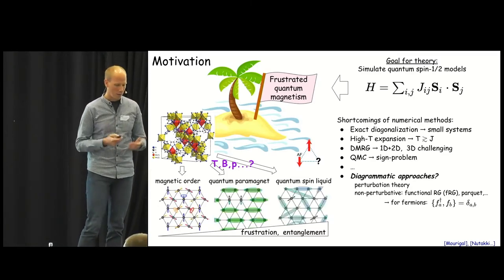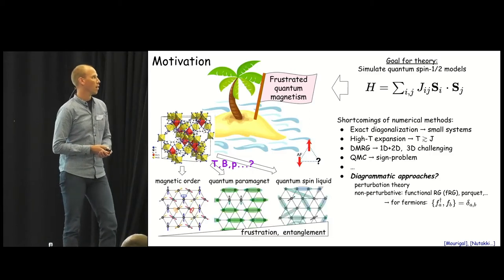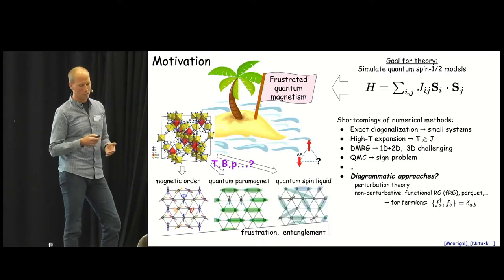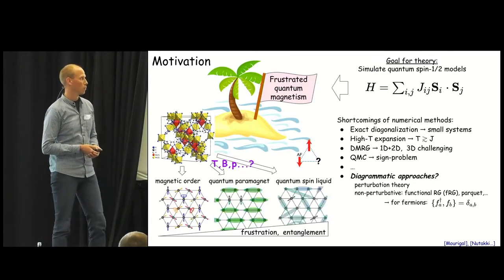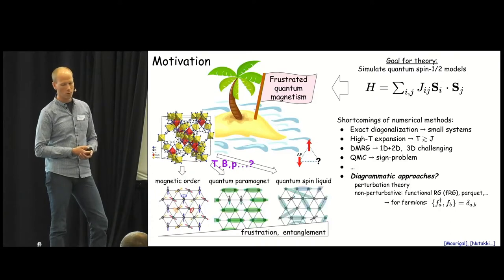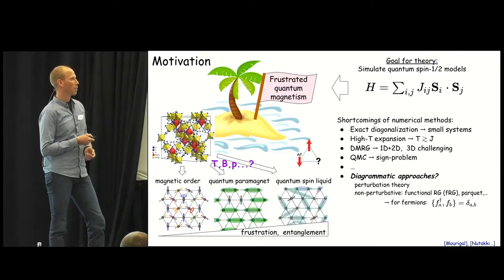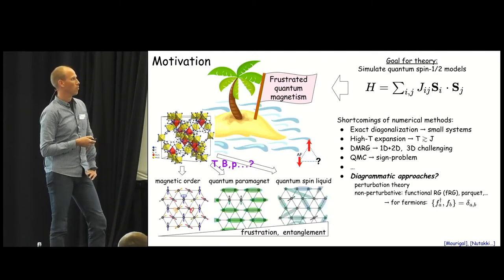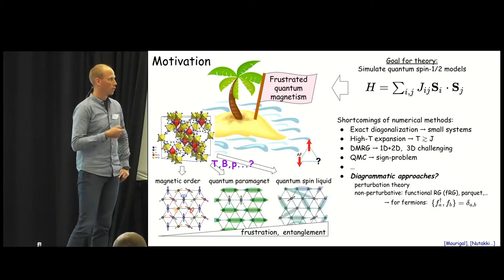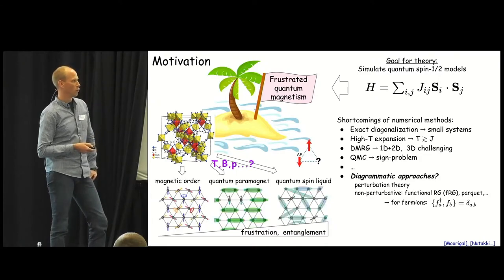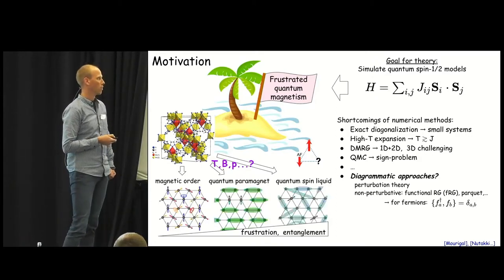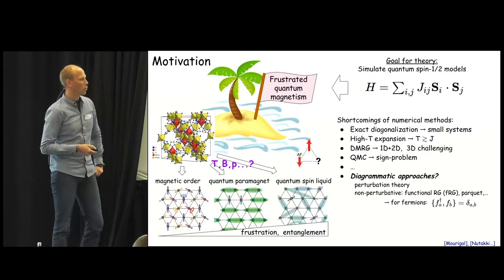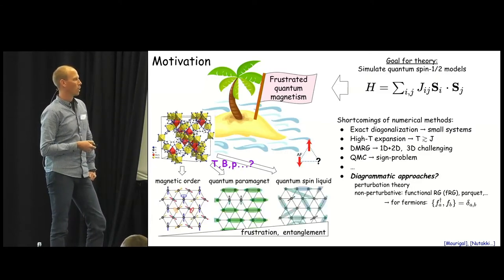Unfortunately you can do very little analytically in an exact fashion. So the main workhorse here is numerical methods and there is not a single numerical method that you can take out of the box that always works. Each method has a certain set of shortcomings. For example, exact diagonalization only usually works for small systems, high temperature expansion as the name says you're limited to temperatures usually above the coupling constant J. The DMRG density matrix renormalization group is great for 1D, it now works also for 2D but in 3D it's still very challenging to apply. Quantum Monte Carlo works in all dimensions but only for certain Hamiltonians that don't have a sign problem.